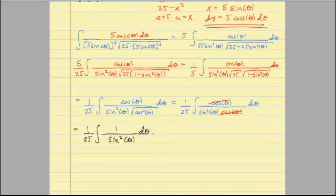Keep rewriting: 1 over 25 out front. The cosine thetas cancel, and I'm left with 1 over sine squared theta d theta. You might think about whether you could use a trig identity here, but the easiest way is to remember that 1 over sine squared is just cosecant squared of theta.